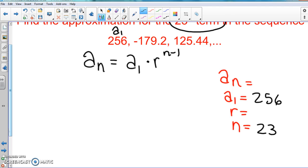So here, let's go ahead and do our terms here. So we know we do a_2 divided by a_1. So here, a_2 is the negative 179.2, divide that by 256 which is a_1, and we divide that in the calculator, you get a negative 0.7.